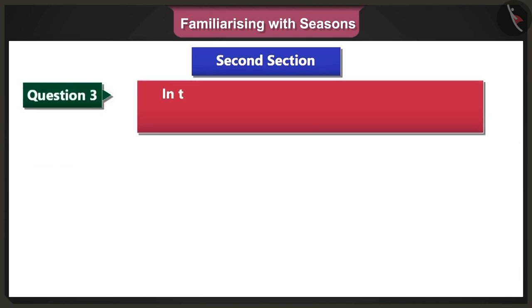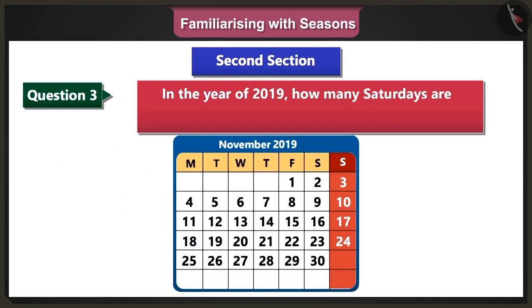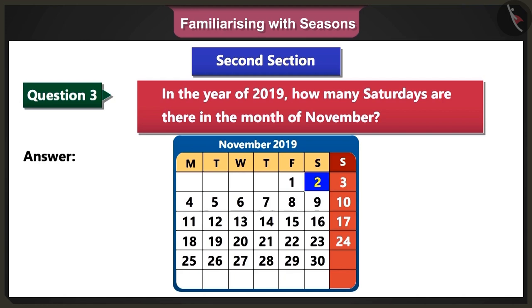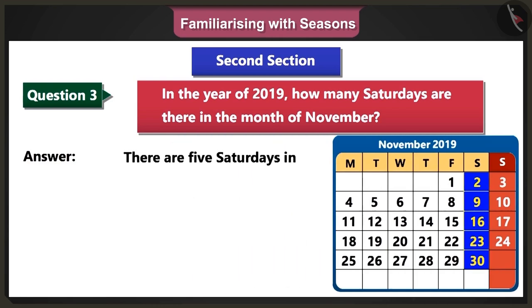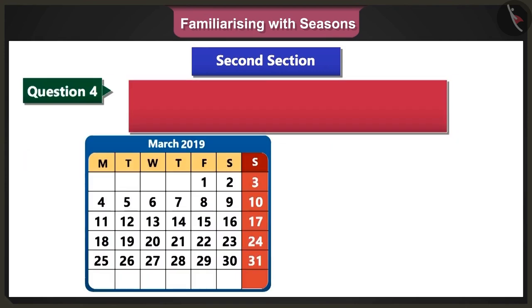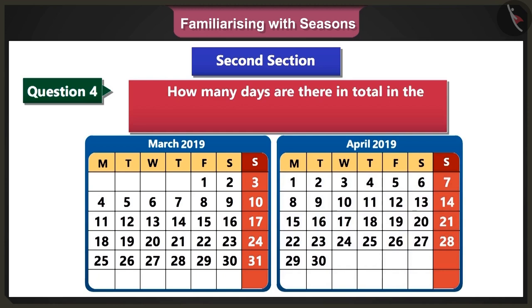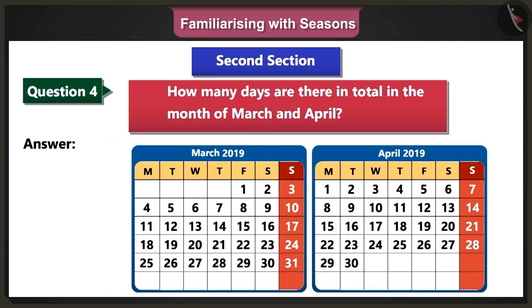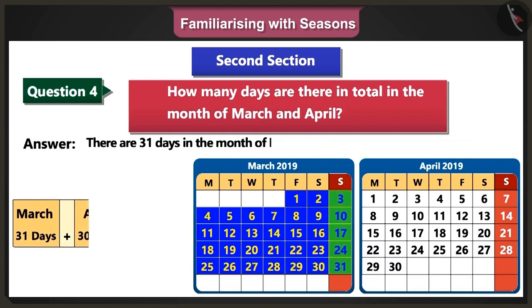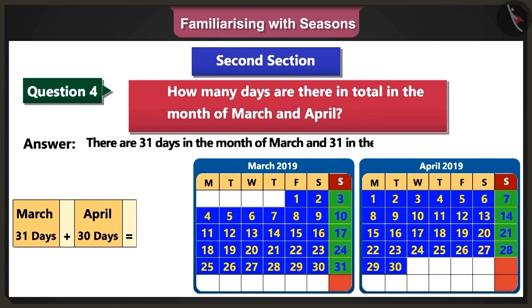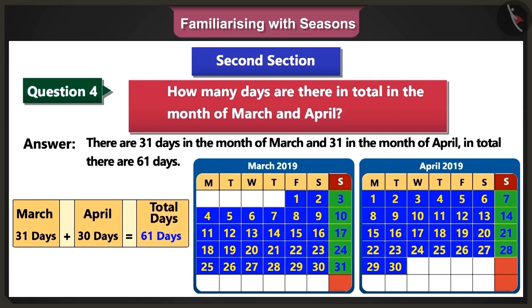Third question: In the year 2019, how many Saturdays are there in the month of November? Answer: In the year 2019, in the month of November, Saturdays come on the 2nd, 9th, 16th, 23rd, and the 30th. Therefore, there are 5 Saturdays in this month. Fourth question: How many days are there in total in the month of March and April? Answer: There are 31 days in March and 30 days in April. When we add both, we get a total of 61 days.